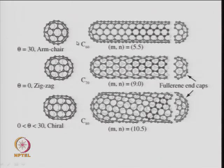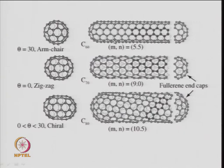If the chiral angle equals 30 degrees, you get the armchair structure, where m and n are both the same — for example, (5,5). One vector is 5 times a1 and the other is 5 times a2, giving the armchair type of nanotube. To close this nanotube at the end, you need a structure related to C60. To close an armchair nanotube (m = n), you cap it with half of a C60 molecule. For other nanotubes, the cap structure must be different.